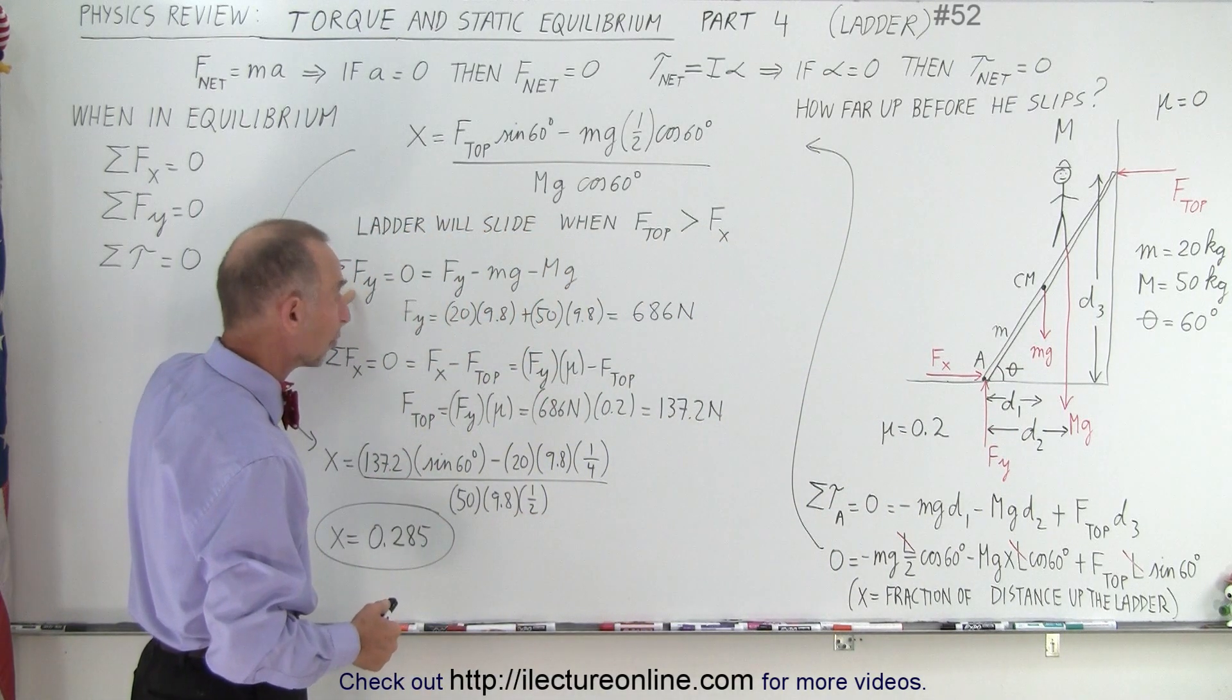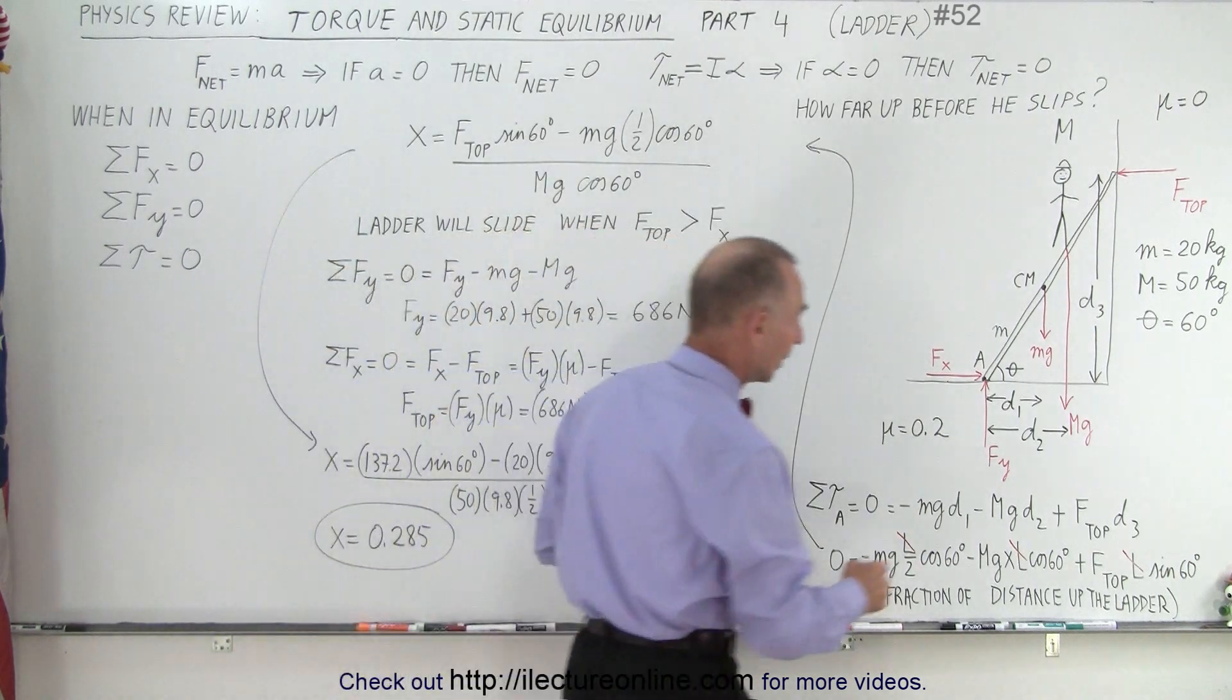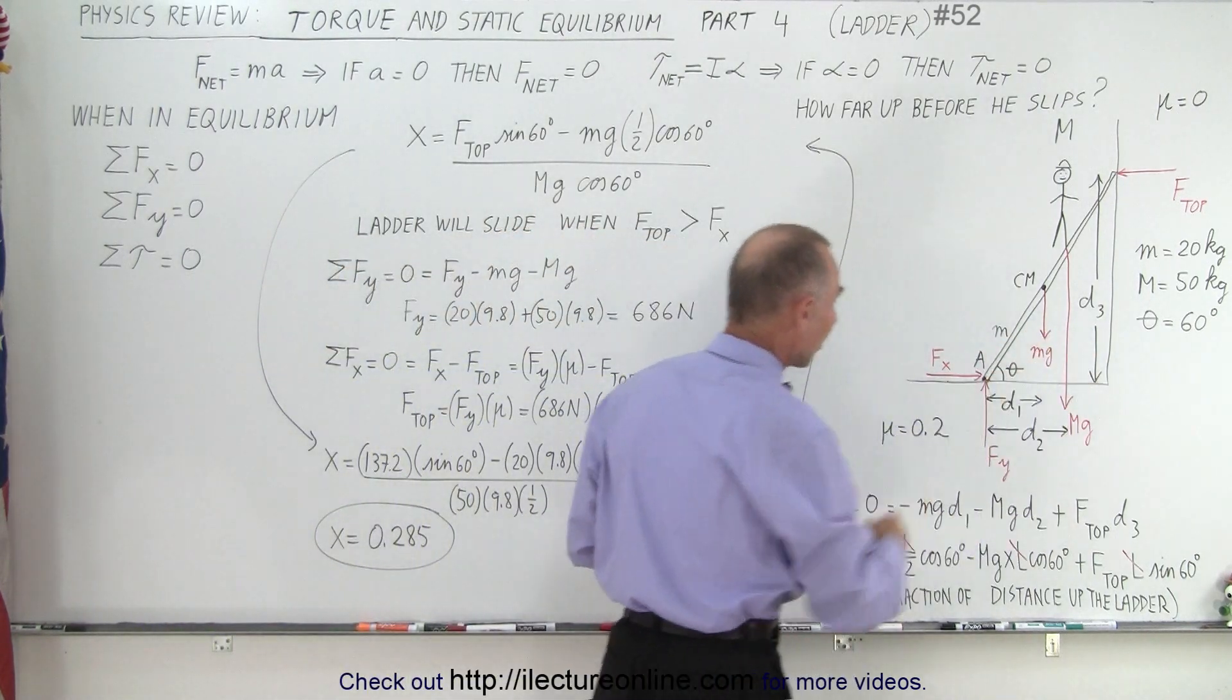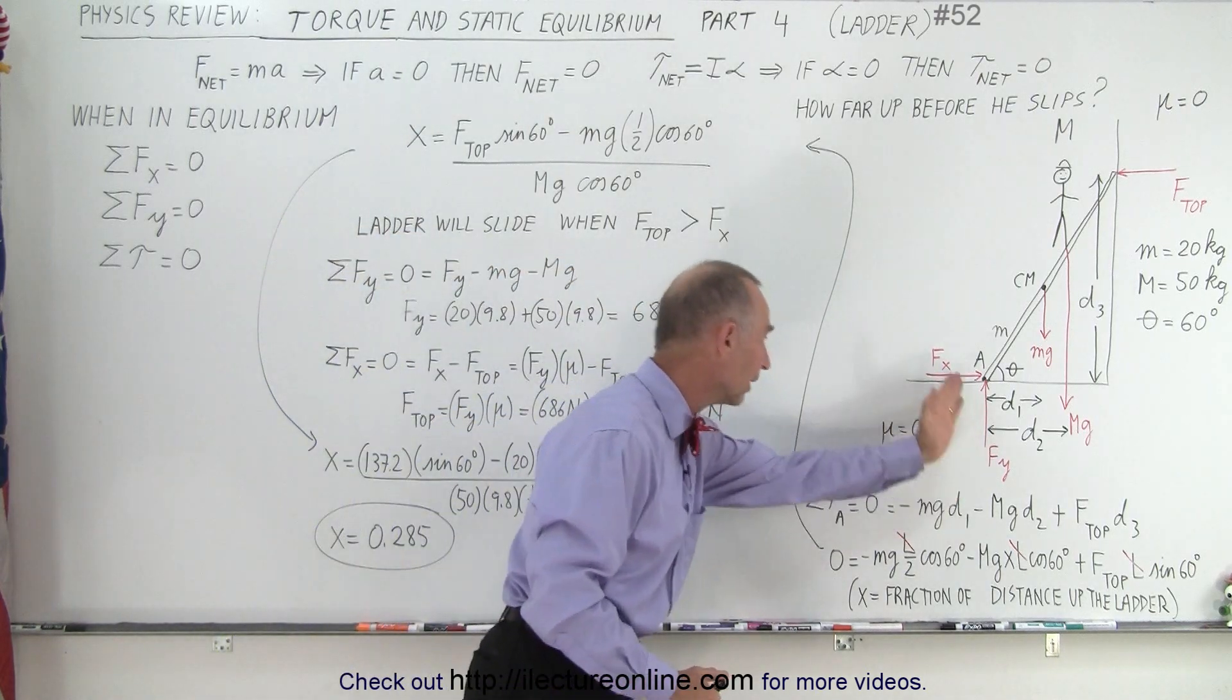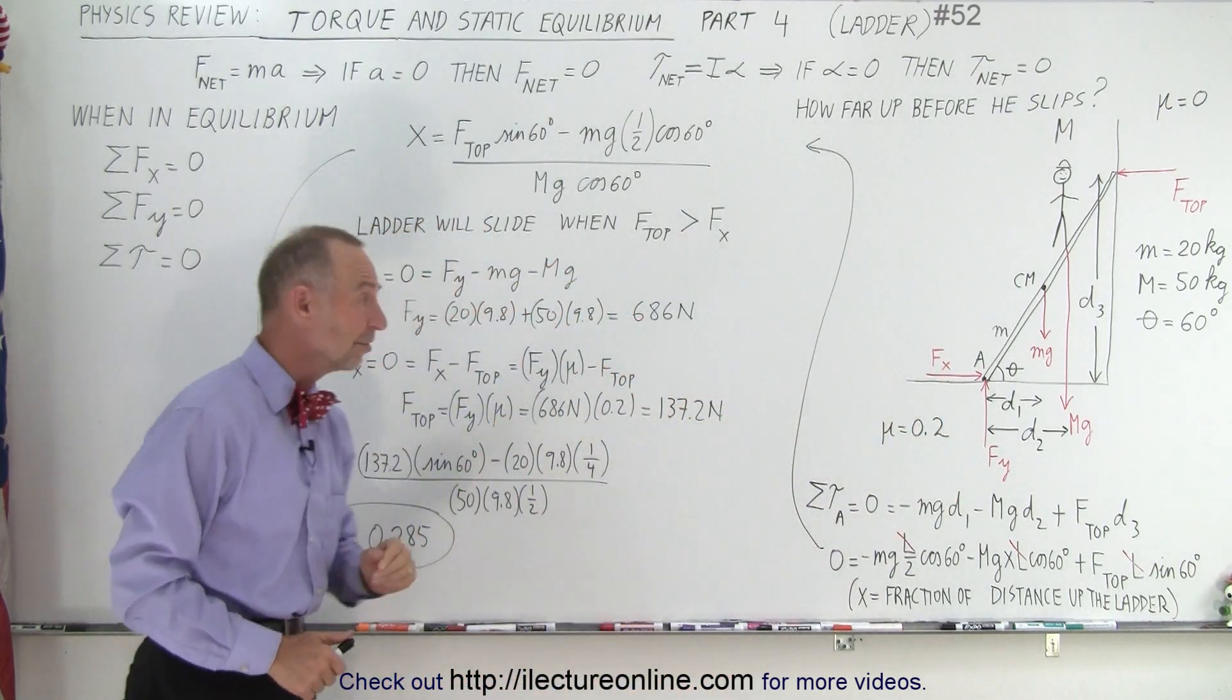To do that we need to find the sum of the force in the y direction. And so we sum these three forces up. We then discover that the force in the y direction at the bottom here is 686 newtons.